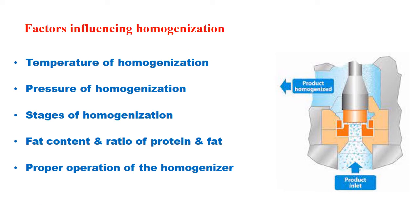Here we will see the factors influencing homogenization. Firstly, the temperature of homogenization — it should be at least 40 degrees Celsius and above. The second is pressure of homogenization, which creates the force that causes the breaking of fat globules. Then stages of homogenization — first stage and second stage — influence homogenization efficiency. Then the fat content of the milk is very important, as well as the ratio of protein to fat. Finally, the proper operation of the homogenizer also plays an important role.